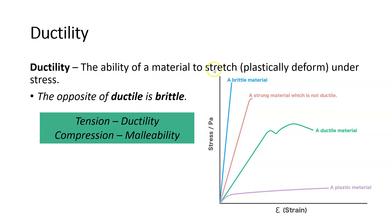Ductility is the ability of a material to stretch plastically under stress — it's going to bend, it's not going to come back, but it's going to bend without breaking. The opposite of ductile is brittle. Glass is a brittle material — you would not think of bending glass. So glass is the opposite of a ductile material.